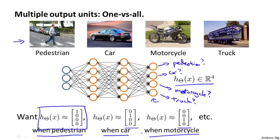So this is just like the one versus all method that we talked about when we were describing logistic regression. And here we have essentially four logistic regression classifiers, each of which is trying to recognize one of the four classes that we want to distinguish amongst.